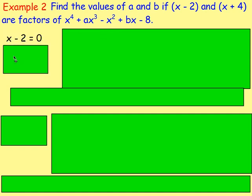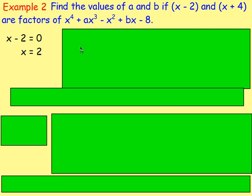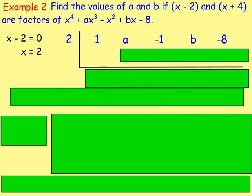First, let's think: x minus 2 is a factor. So if it's a factor, if we divide this polynomial by x minus 2, we will get a remainder of 0. So set x minus 2 equal to 0, add 2 to both sides, x equals 2. Set it up with your L-shape. To the left of the vertical line you write down 2. Write down the coefficients — we've got x to the power of 4, 3, 2, 1 and 0 — so the coefficients are 1, then a because it's ax cubed, then minus 1, then b (because the coefficient is just b), and then negative 8.